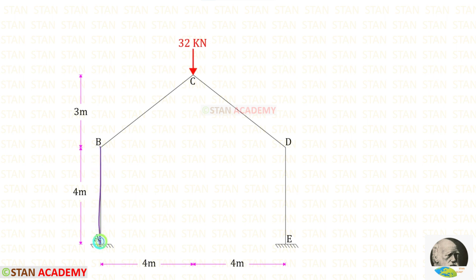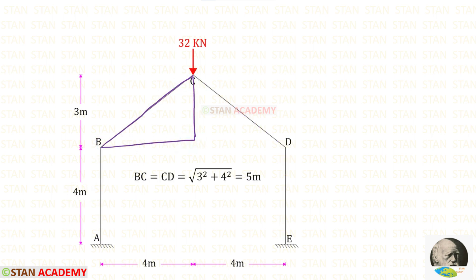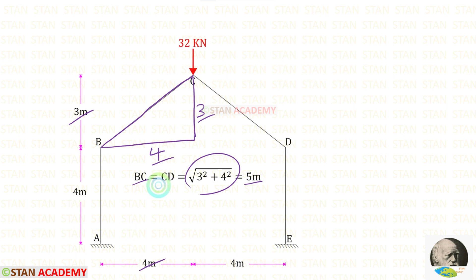The height of AB and DE is given as 4 meters. We need to find the inclined length of BC and CD — both will be the same. Applying the Pythagorean theorem to this triangle, with a base of 4 and height of 3: the square root of 3² + 4² gives us 5 meters, which is the inclined length of BC and CD.